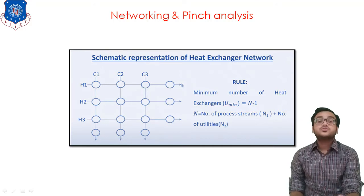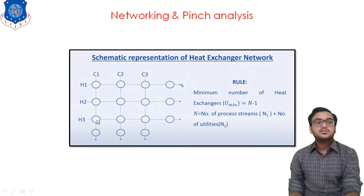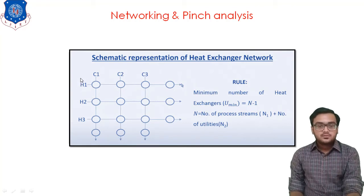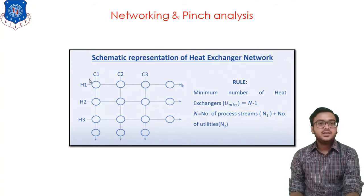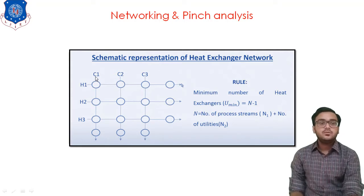We have three cold streams: C1, C2, and C3. C1, C2, and C3 are passing over the pipe inside which the hot fluid H1 is flowing. Due to indirect contact through the pipe, there is a transfer of heat. At the outlet after C3, let's say we have a fluid with a temperature of 150 degrees.